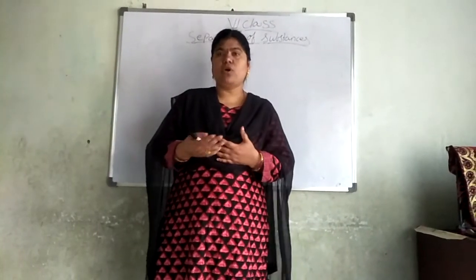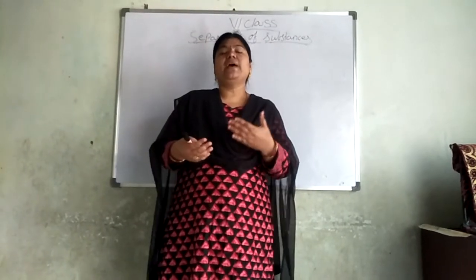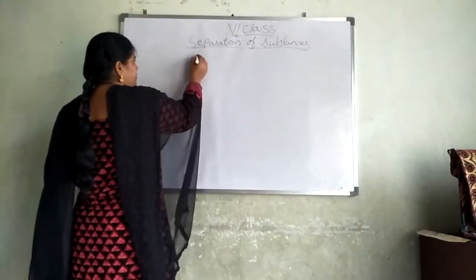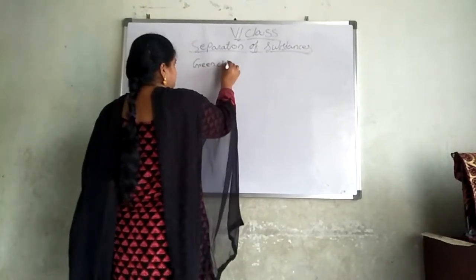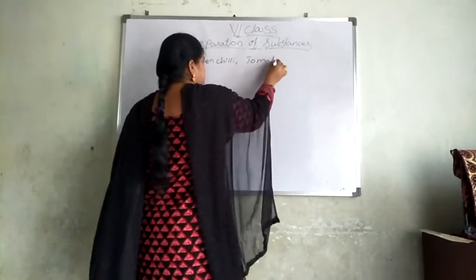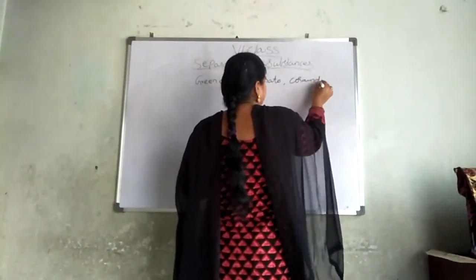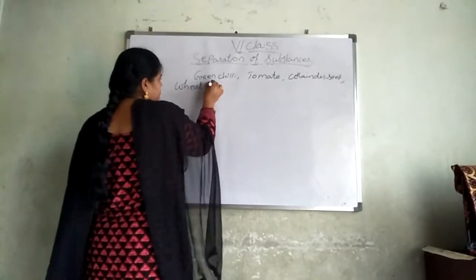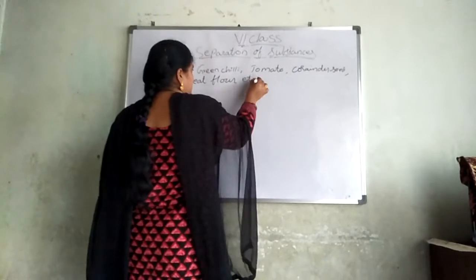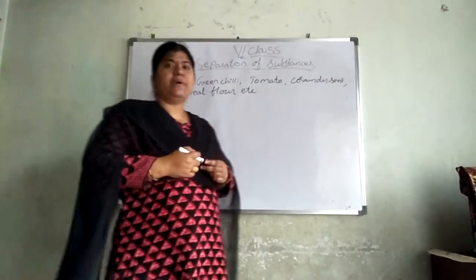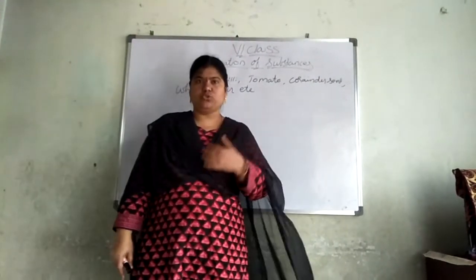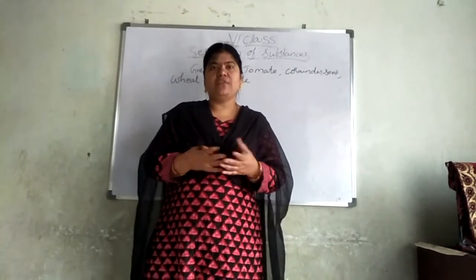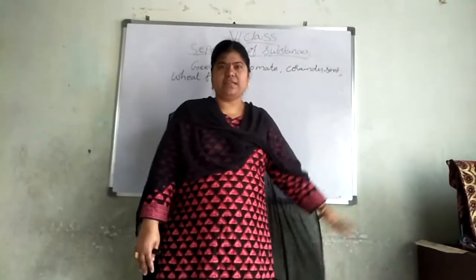Can we separate all these things? What are the mixtures we are taking here? According to your textbook, Herman went to a market. What did he purchase? He purchased green chilli, tomato, coriander seeds, wheat flour, etc. His mother asked him to go to the market and purchase some grocery and come home. He purchased all these things and while coming home, he was running and tripped and fell.